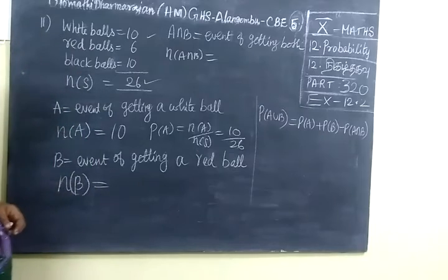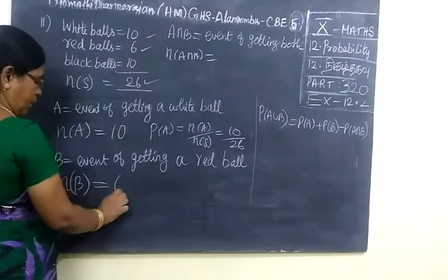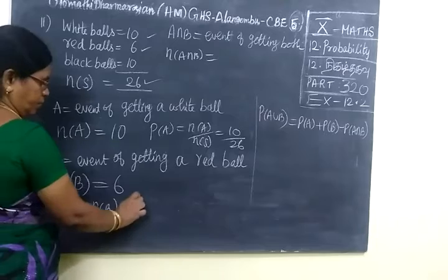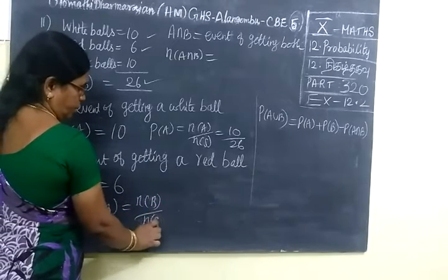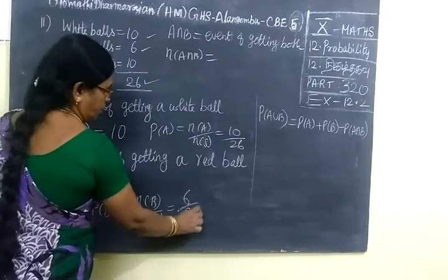Then next we are getting a red ball. Red number of balls is 6, so n(B) = 6. Therefore P(B) = n(B)/N = 6 by 26.